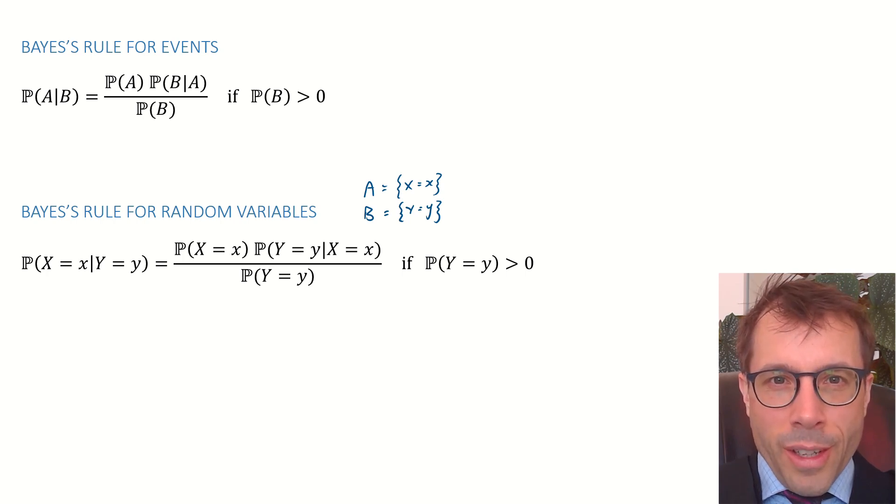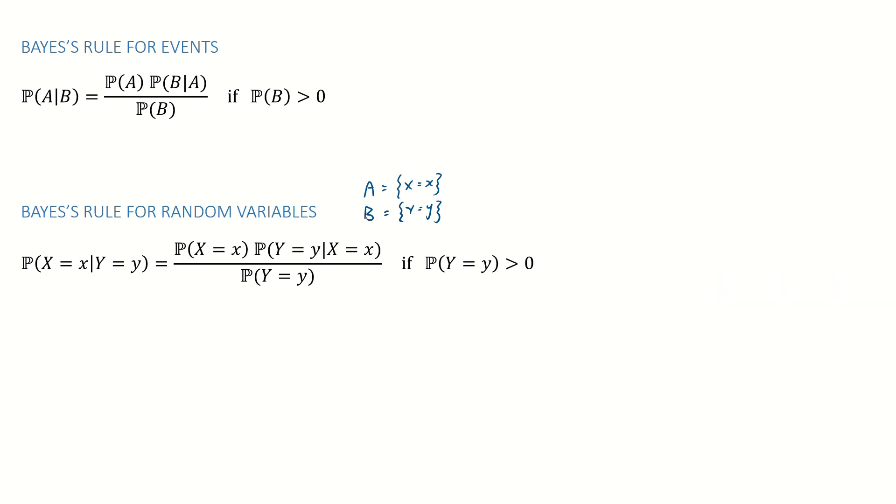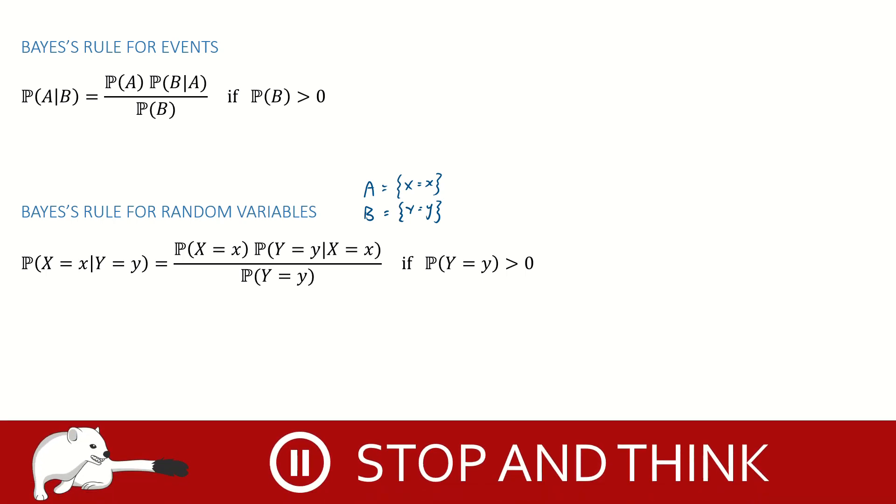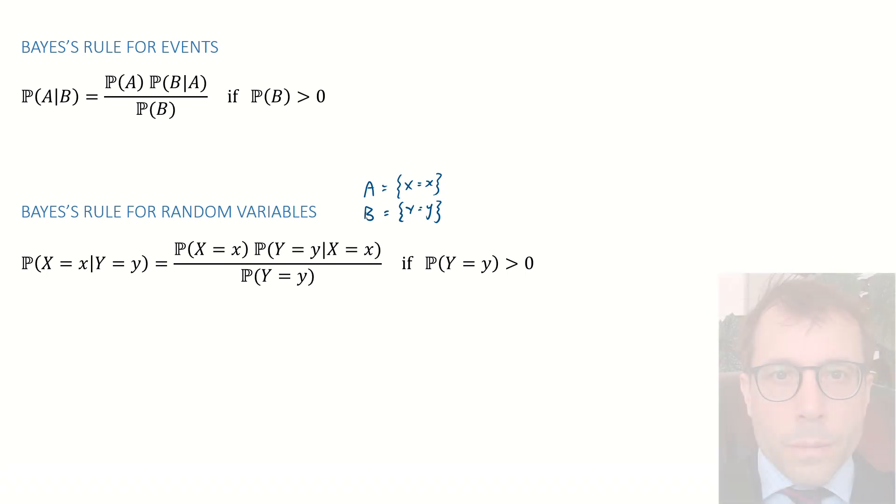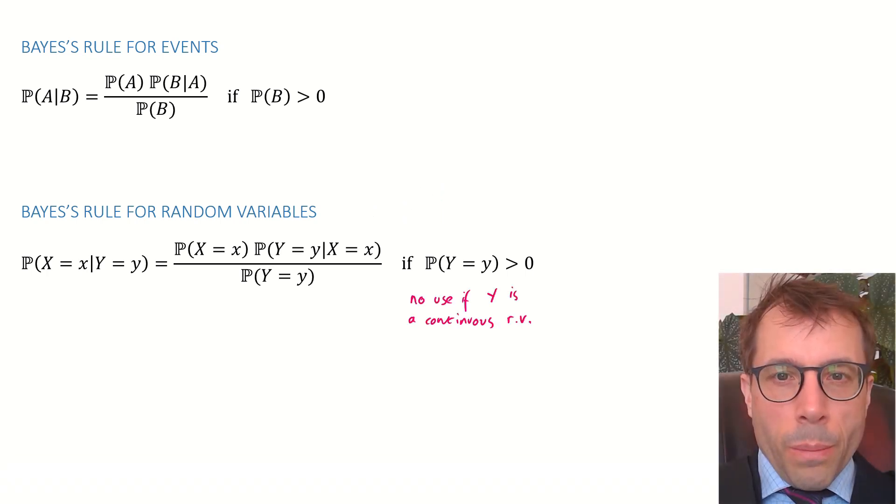But hold on. There's a problem here, when y is a continuous variable. Can you spot what goes wrong if y is continuous? The problem is this clause here. If y is a continuous random variable, then the probability of observing any specific value little y is 0. So the denominator is 0. So Bayes' rule for events never applies.